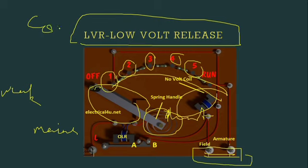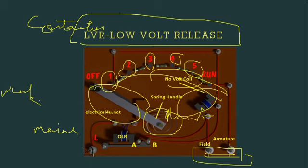In contactor-type starters, we attach the No Volt Release Coil to all the contacts. In running condition, when the supply voltage fails, the shunt coil is weakened, and the No Volt Release Coil will return to the starting position. This is how it works in hand-operated starters.